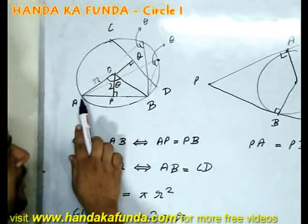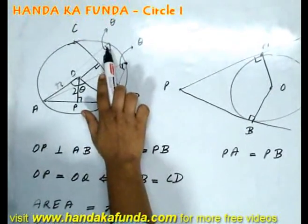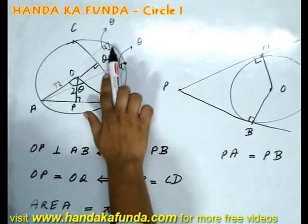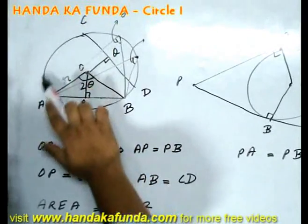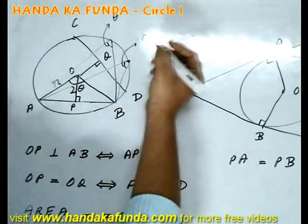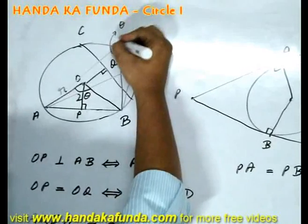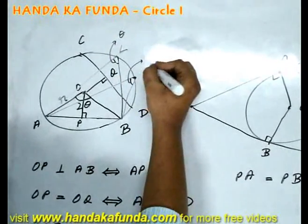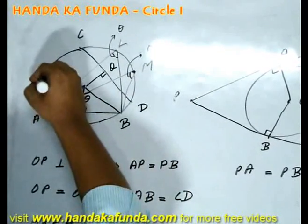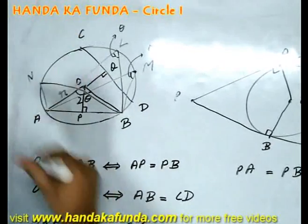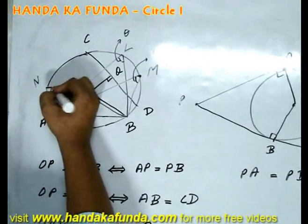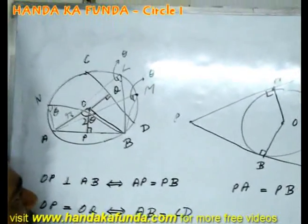Another point to note is that the chord AB, if it subtends theta at any point on the circumference, it will subtend the same angle at all other points. As you can see, this is L. At L, it subtends theta. At M, it subtends theta. If I take any other point, let's say N, it will also subtend theta at any point on the circumference.